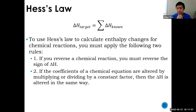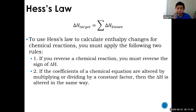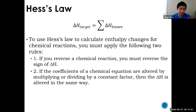To use Hess's Law, you must follow two rules. First, if you reverse a chemical reaction — switch reactants and products — you must switch the sign of ΔH: positive becomes negative and vice versa. Second, you can multiply the entire equation by a constant or divide by a constant. If you do that, you must do the same thing to ΔH. If you multiply everything by two, you also multiply ΔH by two.